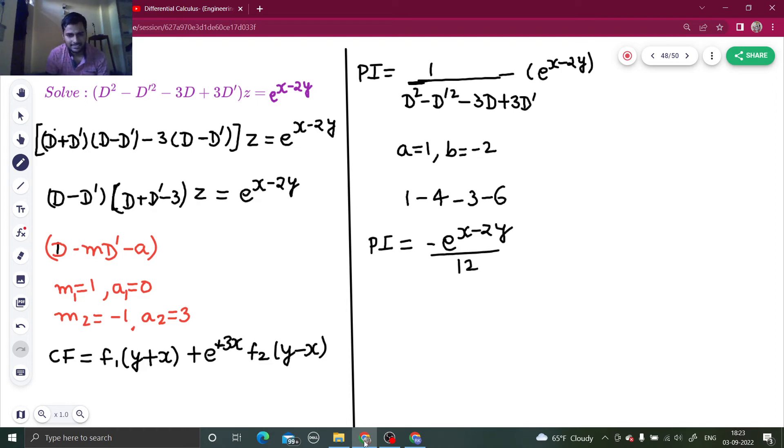Final answer z equals to cf plus pi. Z equals to f1 y plus x plus e power 3x f2 y minus x plus pi, minus e power x minus 2y divided by 12. This is my final solution.